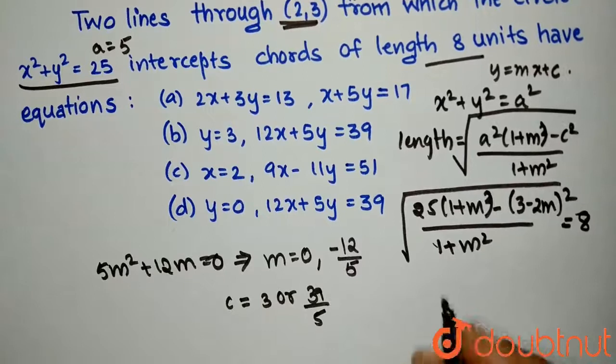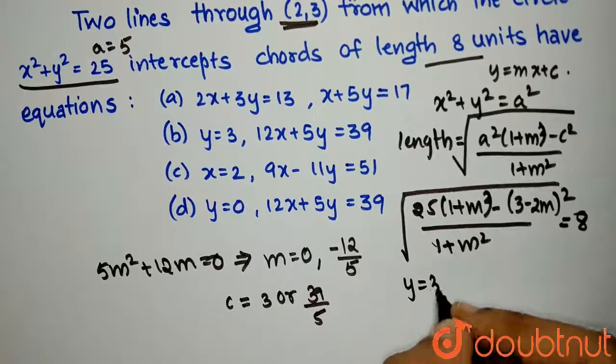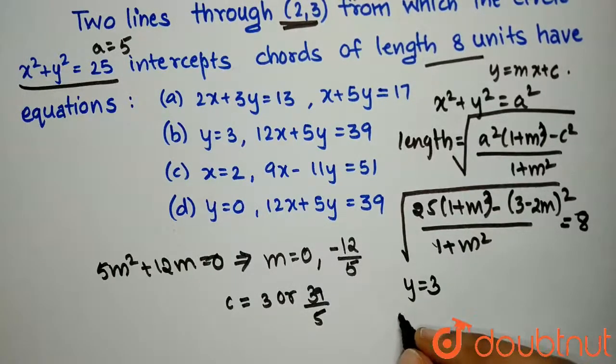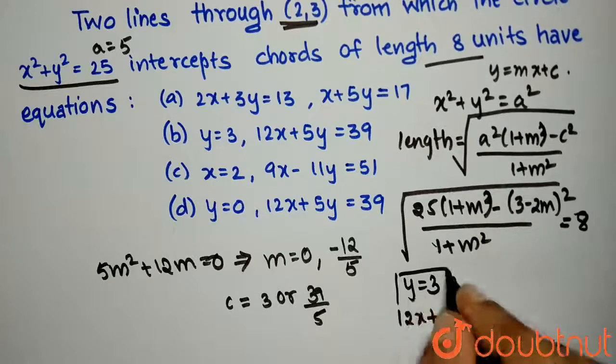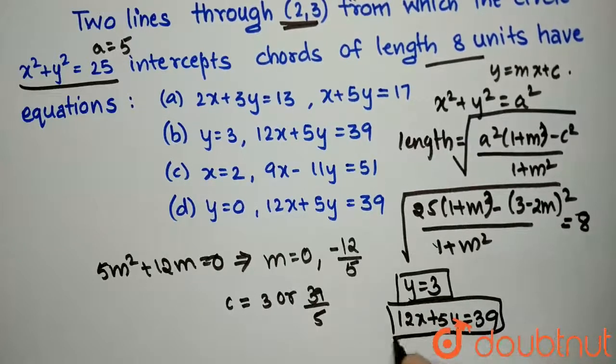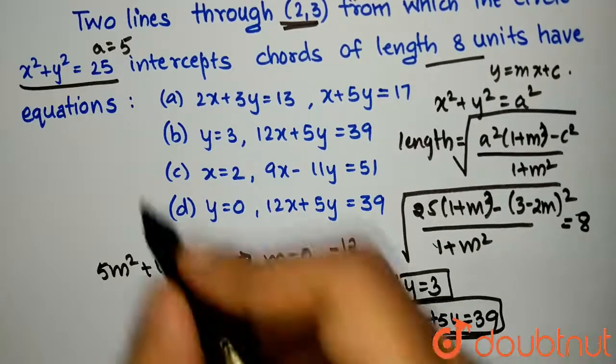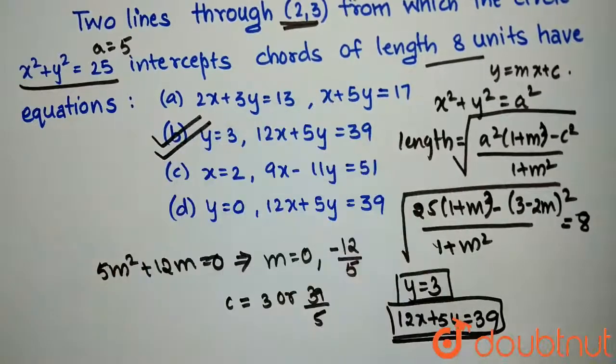Therefore, my equation would be either y=3 or 12x+5y=39. That is, option B is correct.